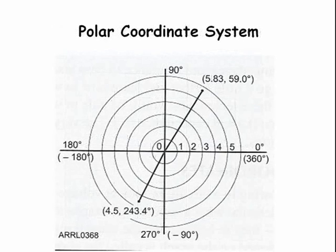Another equally good way to specify those same points in space is with the polar coordinate system. Every point has a length from the origin to the point and an angle from the x-axis. By the way, up is a positive angle and down is a negative angle. An example would be 5.83 at an angle of 59 degrees, or 4.5 at an angle of 243.4 degrees.